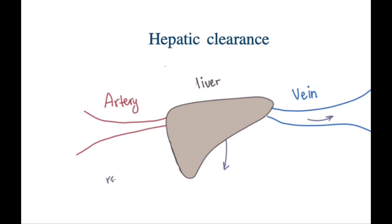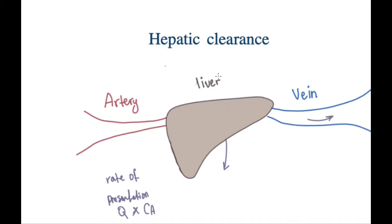We have here something called the rate of presentation. The rate of presentation equals the blood flow, represented by Q, multiplied by the concentration of the drug inside the artery, CA. How fast the blood is flowing is also important, because if the blood is flowing very fast, the liver will not have enough time to clear enough of the drug from the blood, and thus it will affect the clearance. If it was slow, there will be more time for the liver to clear the drug. This is important, as we said, to maintain a therapeutic level of the drug inside the body.